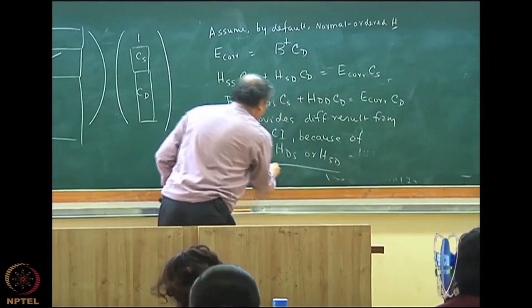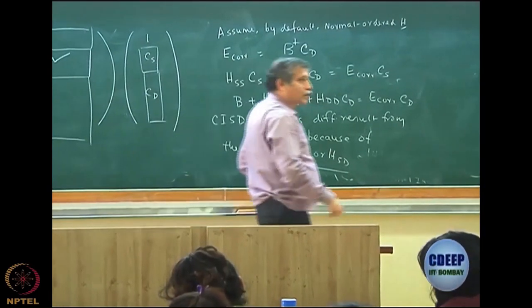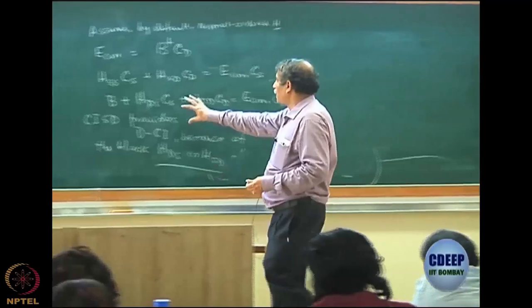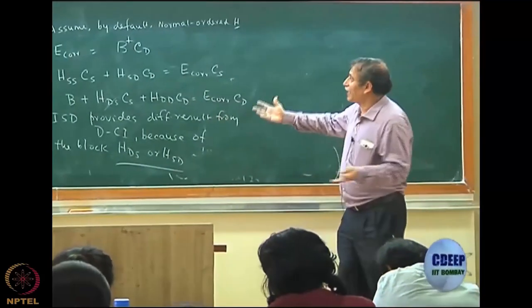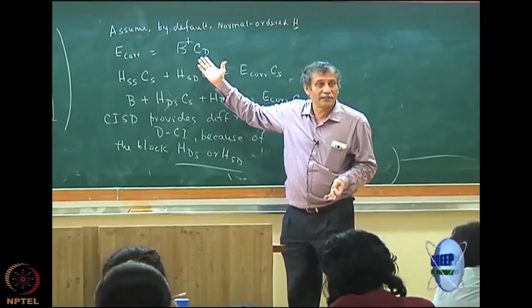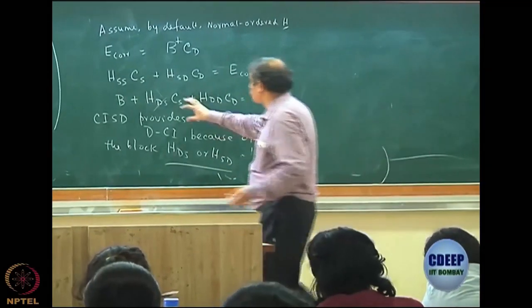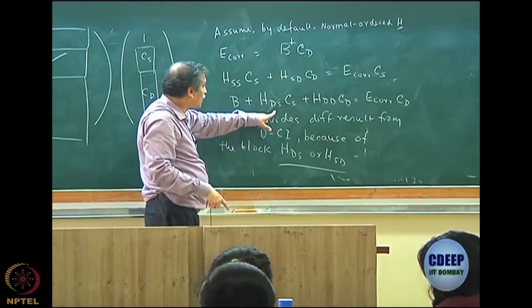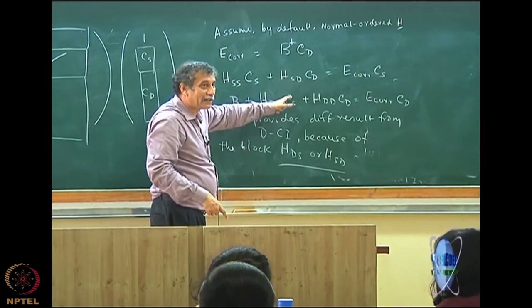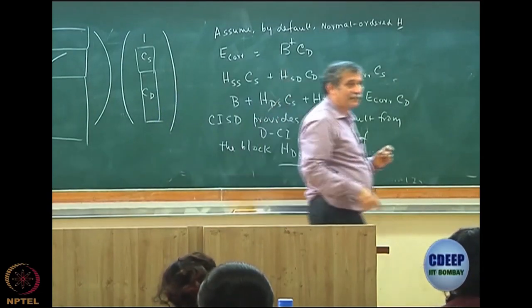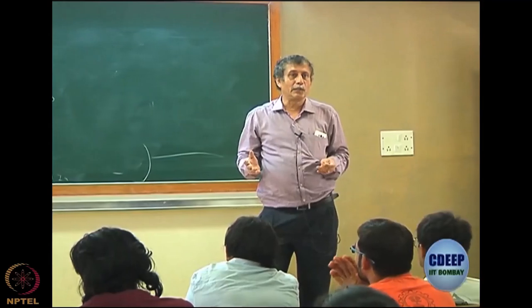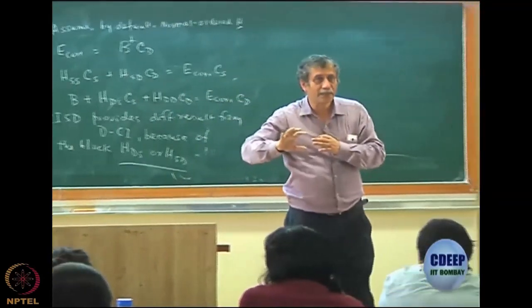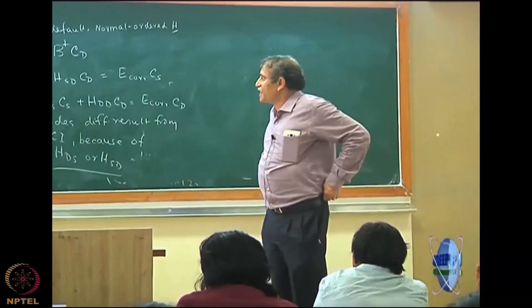Then the last set of equation is HD0 which is my B. B into 1, so B plus HDS into CS plus HDD into CD equal to E correlation CD. Note that if this term was not there, then my CD equation would have been exactly like double CI. And your correlation energy is exactly like double CI. So I do not care about this equation. So what is HSS? I am least bothered. The problem is this guy, the DS or SD. This guy is not 0. And that is the reason CISD provides different result from DCI.